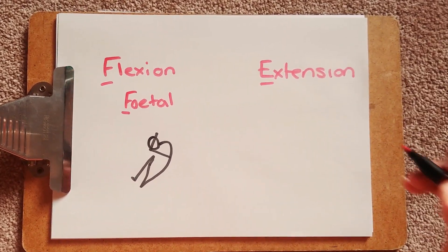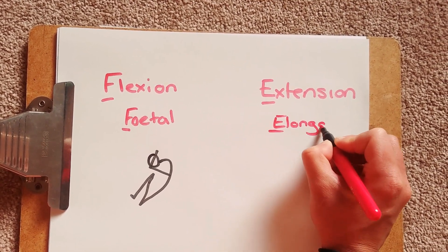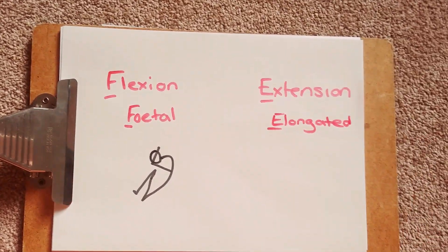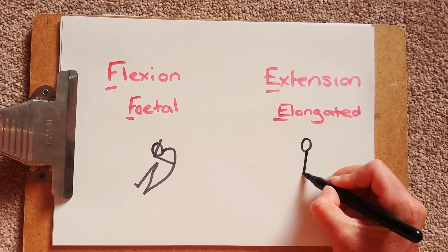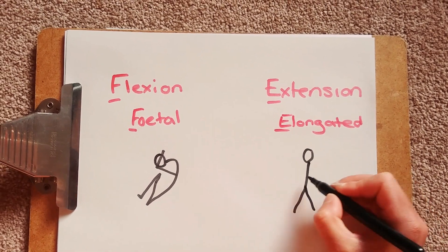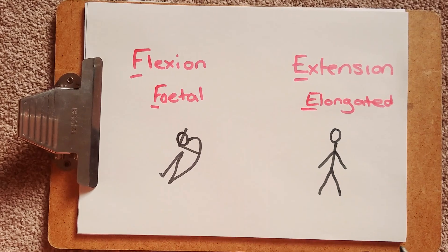Whereas in extension we're using elongated as our word. So all of our joints are elongated when they are extended. Now the most elongated we can be is in that really nice neutral position. That starting point position when you're starting exercises. That get ready position.